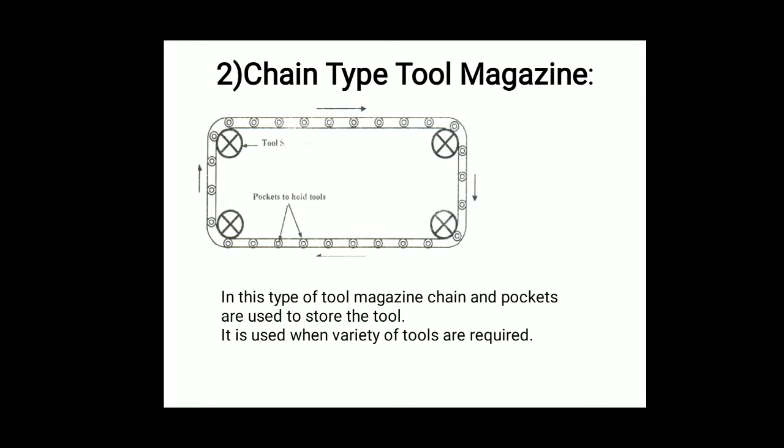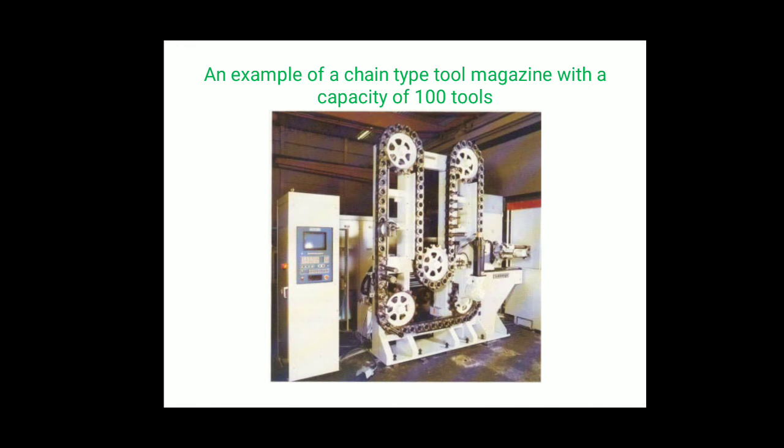The second type is the chain type tool magazine. You can see in the figure a conveyor or chain with small circles representing tool holder pockets to hold the tools. A large number of tools can be stored on this chain type. It is used when a variety of tools are required. One example shown has a capacity of 100 tools stored at one place.